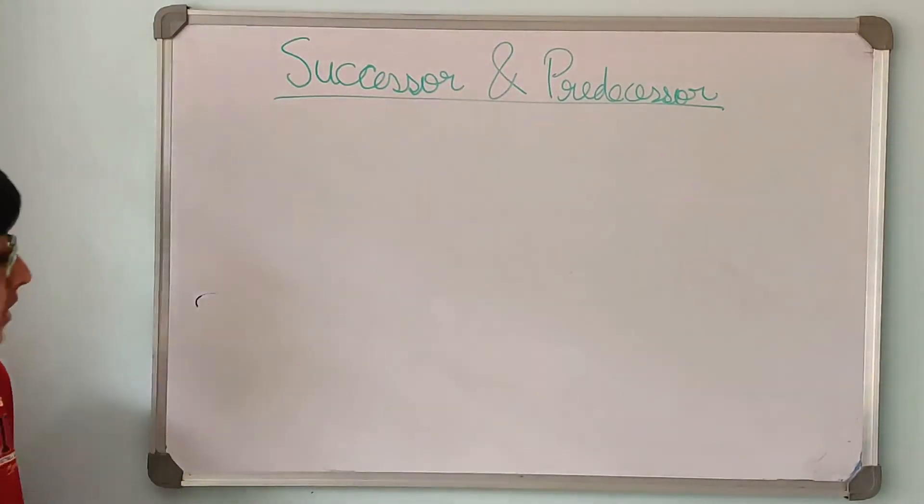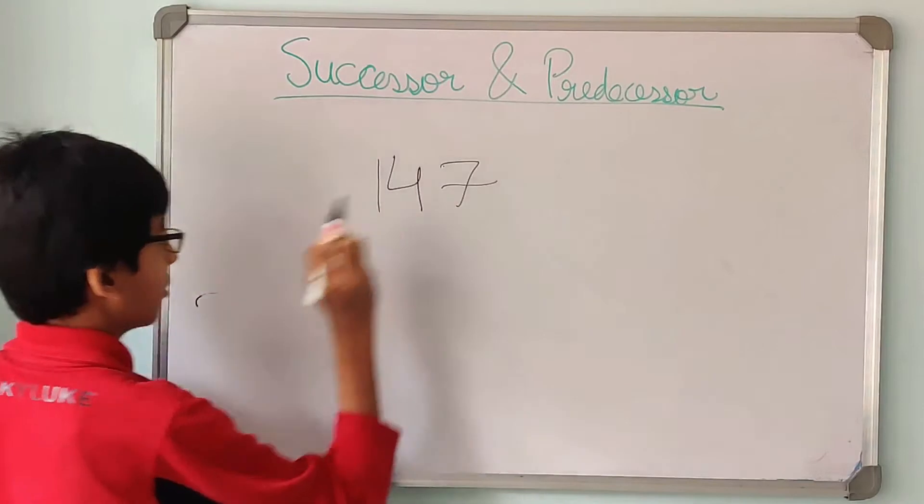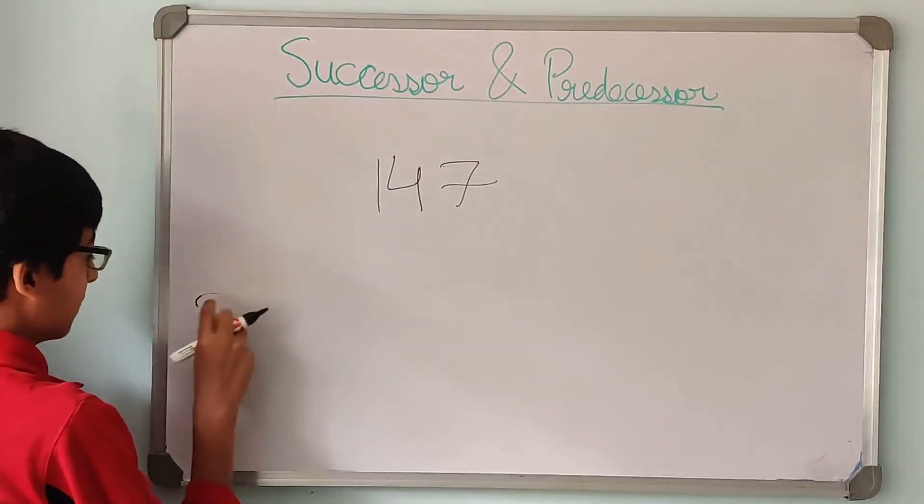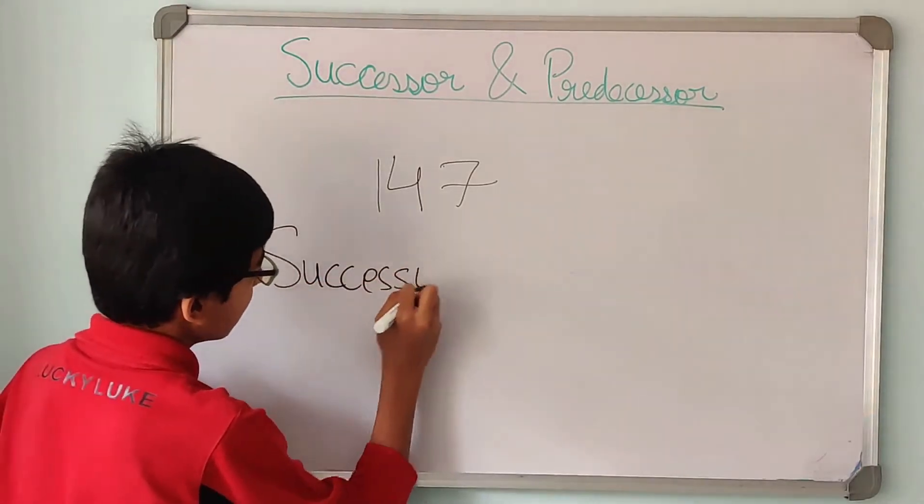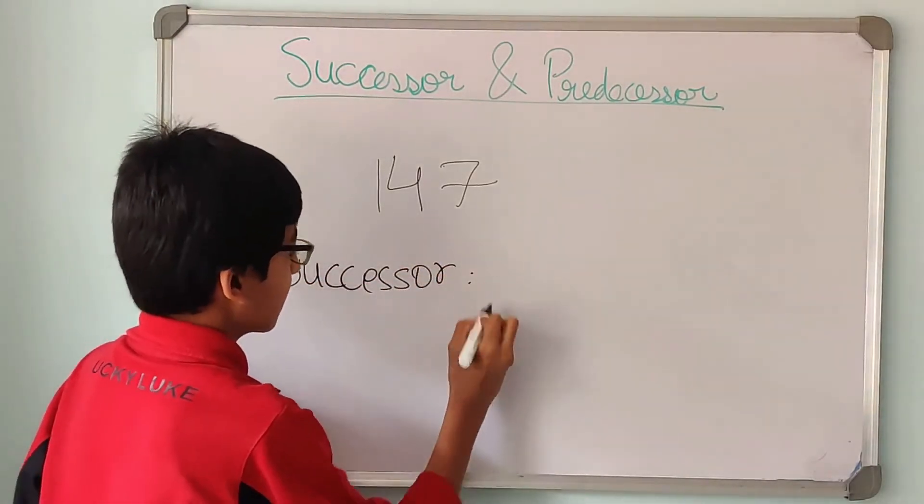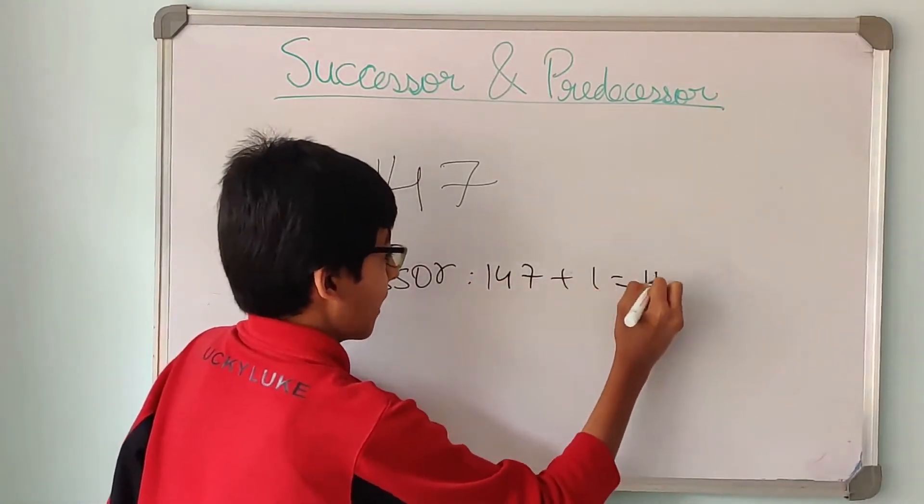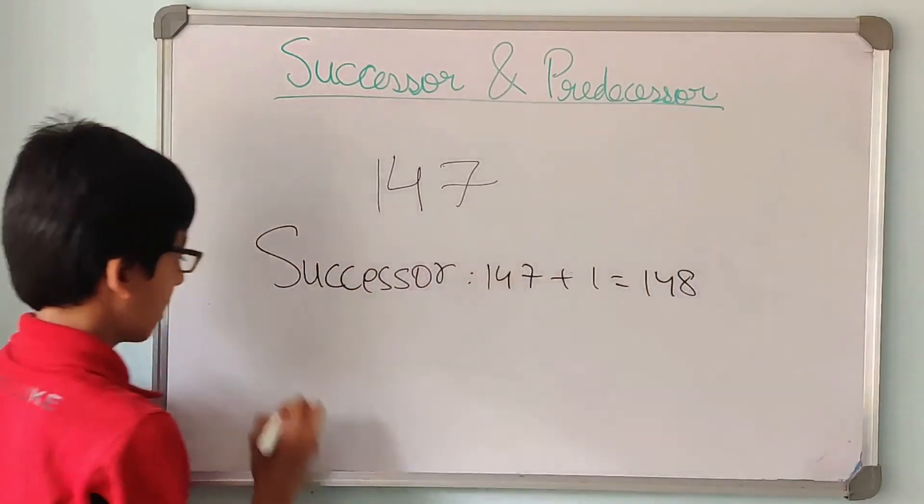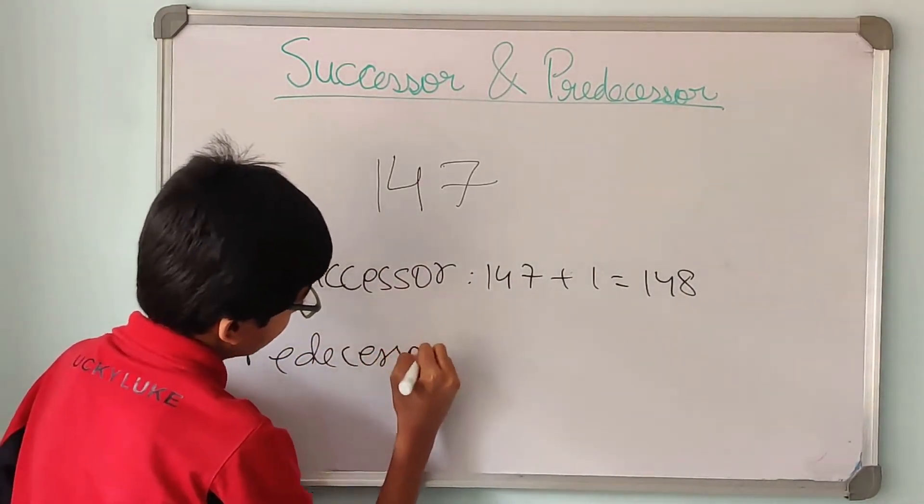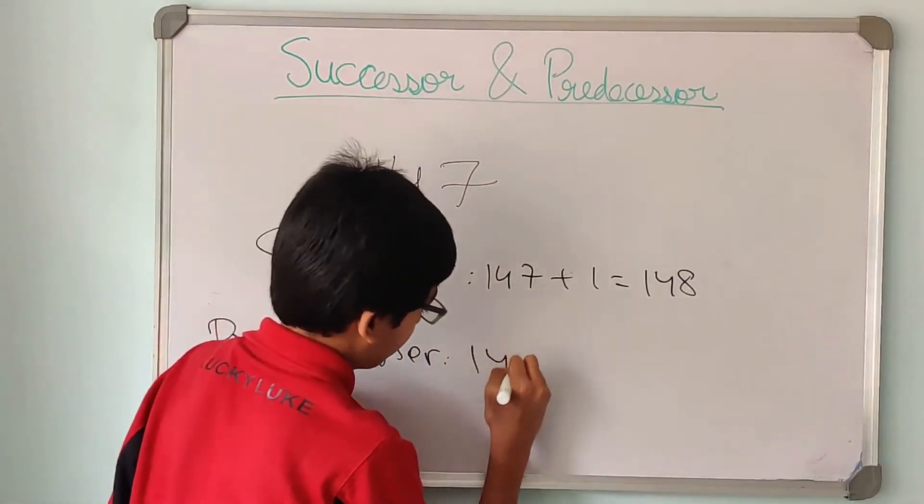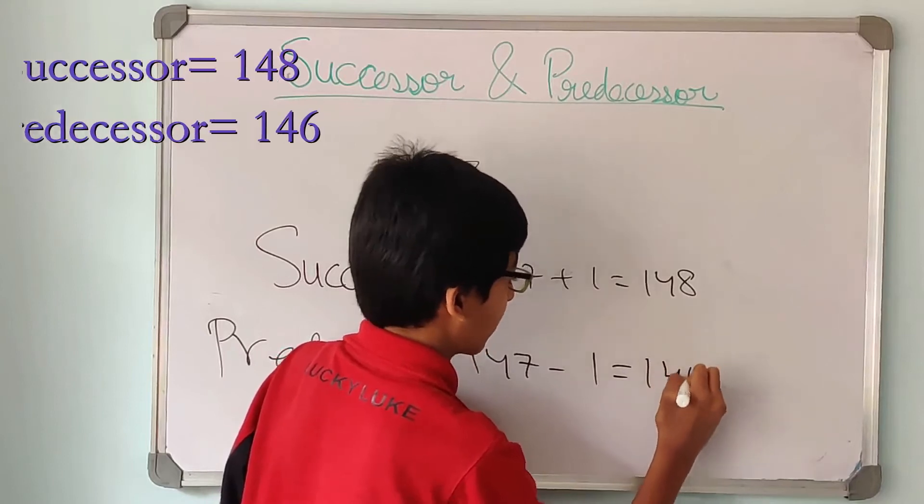Okay, so now let us find the successor and predecessor of 147. Over here you can see that the successor is the number plus 1. That gives us 148. And the predecessor is the number 147 minus 1. That gives us 146.